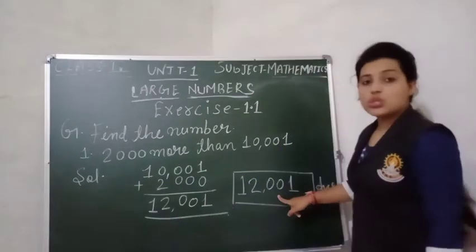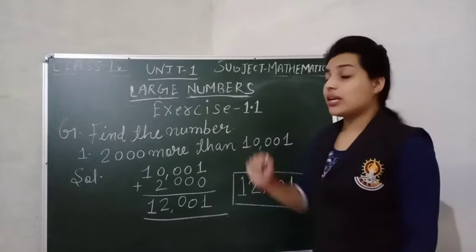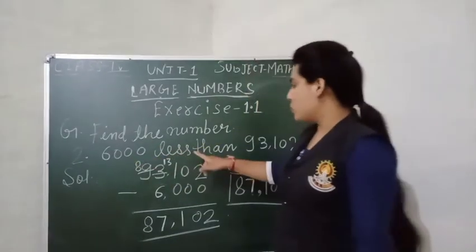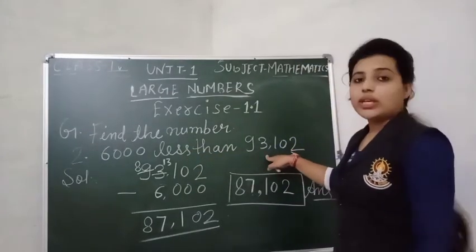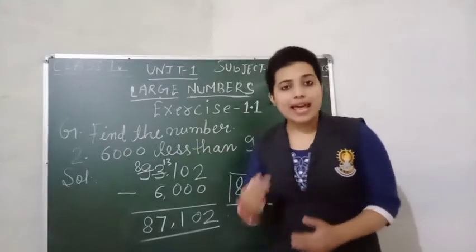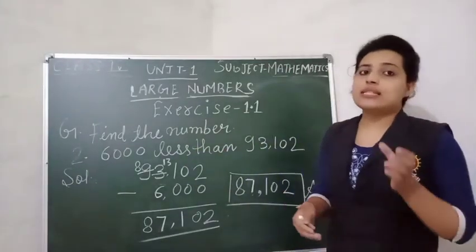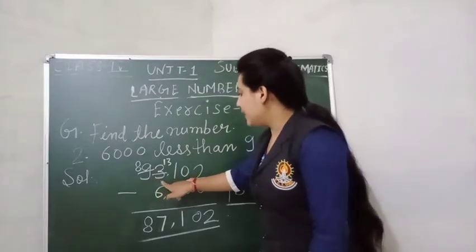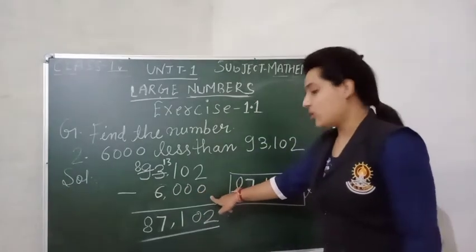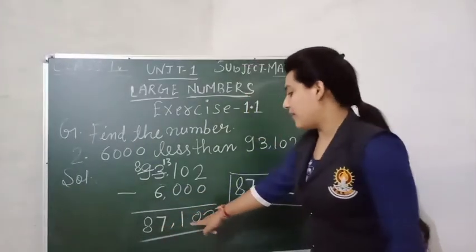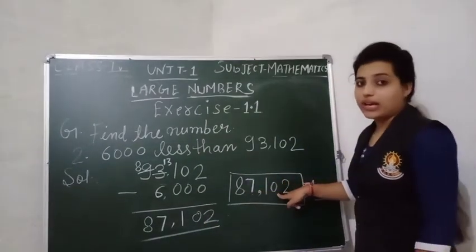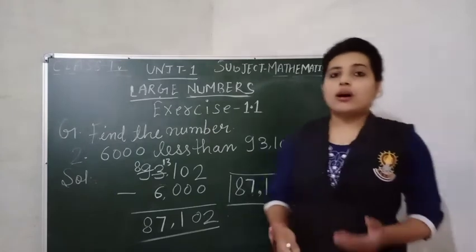Second question is 6,000 less than 93,102. If we are talking about less, that means subtract. So 93,102 minus 6,000—we get 87,102. So our answer is 87,102.